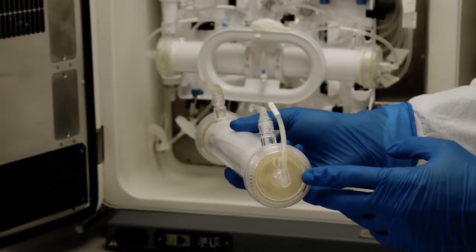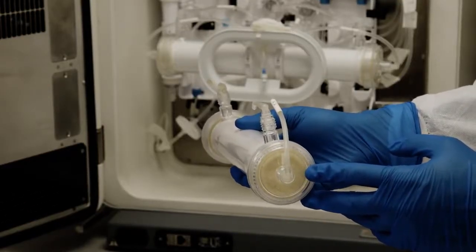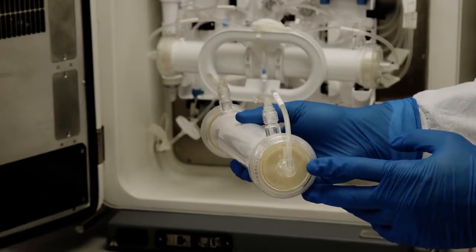For adherent cells, this is going to provide a 21,000 centimeter squared surface area, equivalent to 120 of your T175 flasks.